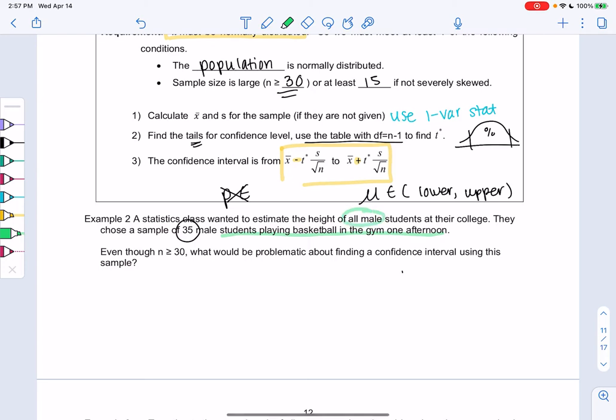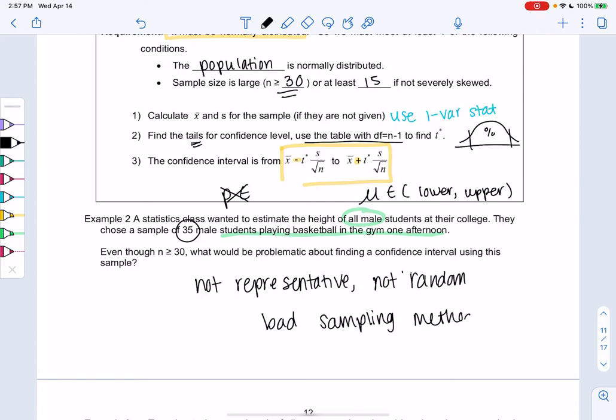I don't think so, right? So it's not representative and not random. It would be those bad sampling methods. Come back in the early chapters. We could really only make a conclusion about students who play basketball, not all students.